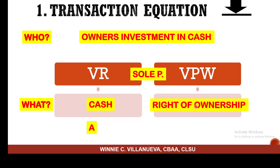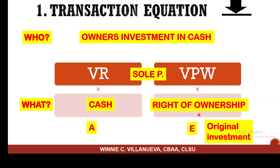Why right of ownership? Because as a business, you are the only one with the right to give the owner ownership of the business. Now, the cash received is tangible — it is property — and it becomes yours, so it is an asset. The right of ownership given out is equity because it is the owner's original investment. The exchange here is between the sole proprietorship and the owner. So asset and equity are your accounting elements involved here.